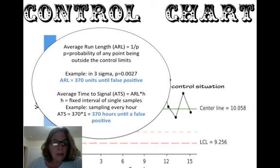Another way to look at this is average time to signal, where we look at how often we're sampling, and we can actually convert the 370 units into hours. In this case, the example is, what if we sample every hour? That means every 370 hours, we would have a false positive. And this gives us a guideline of looking at, well, you know, exactly, are we doing that many samples? How often might we have a false positive?